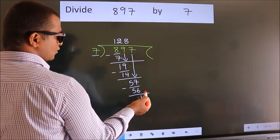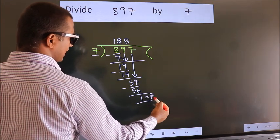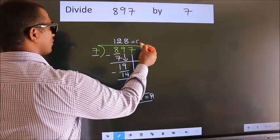No more numbers to bring down. So we stop here. This is our remainder. This is our quotient.